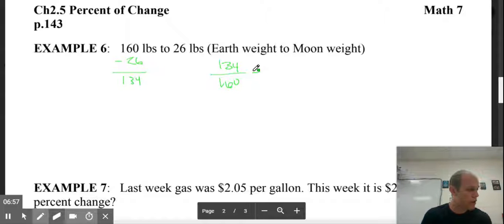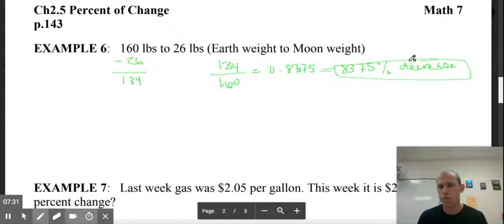And when I divide those, I will get out the answer of 0.8375. So that will convert from a number to be a percent of 83.75%. And I went down. So that would be a decrease.